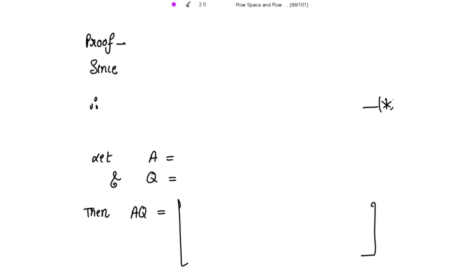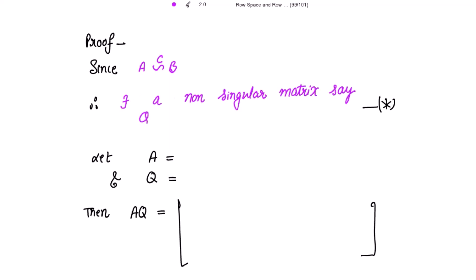Since it is given to us that B is obtained from A by applying column operations, there exists a non-singular matrix Q such that B is equal to A multiplied with Q. Please mark this as star.